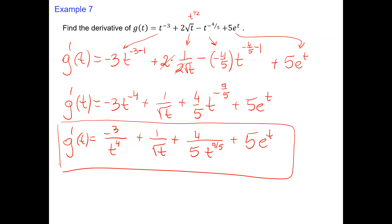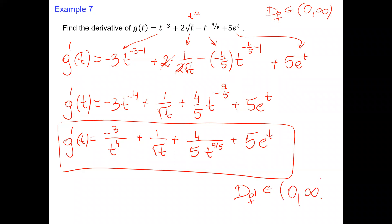For the domain: we have square root and negative exponents, so the domain of the function is positive numbers excluding zero. The domain of the derivative stays the same — positive numbers, not including zero.